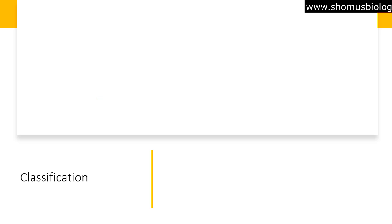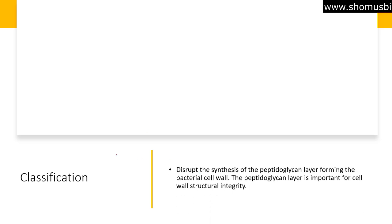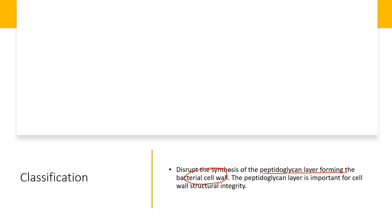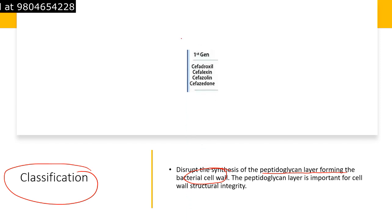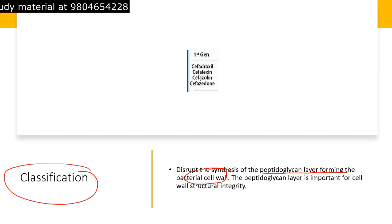Cephalosporins disrupt the synthesis of the peptidoglycan layer forming the bacterial cell wall. By disrupting peptidoglycan structure formation, they cause loss of cell integrity for the bacteria and the bacteria will die. The classification goes from first generation through fifth generation. First generation examples include cefadroxil and cefazolin.